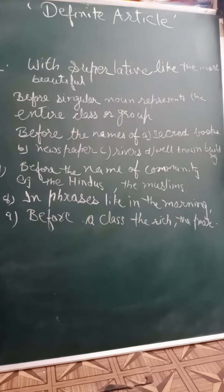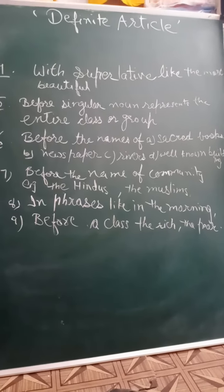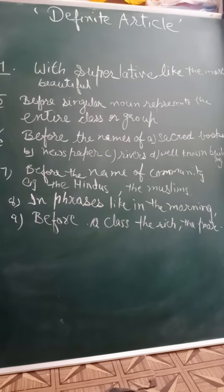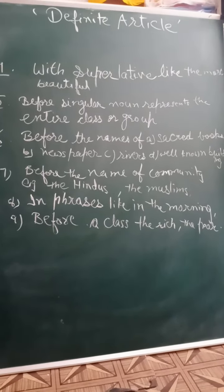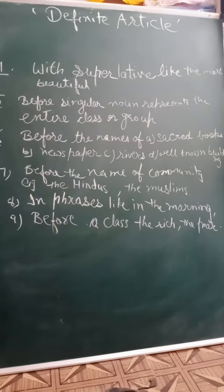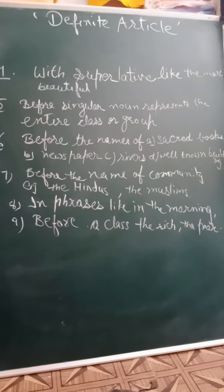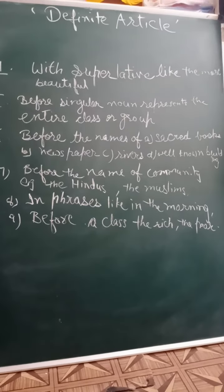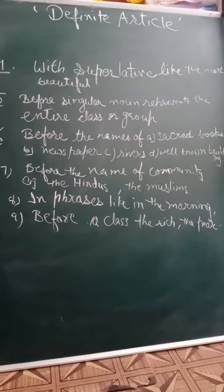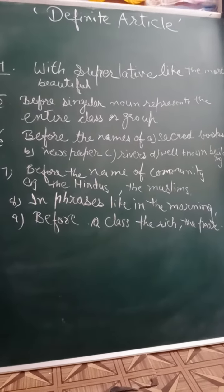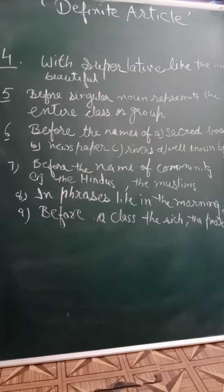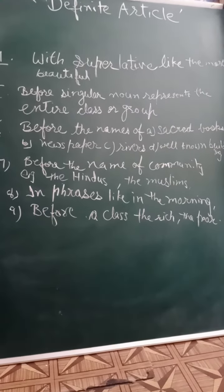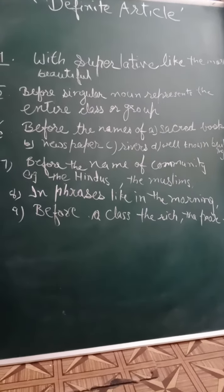Before well-known buildings, like the Rashtrapati Bhavan, the Parliament House, and the Taj Mahal, etc. Another case is when we use article 'the' before the name of a community. For example, the Hindus, the Muslims, the Christians, etc.